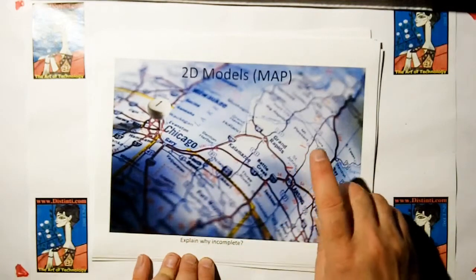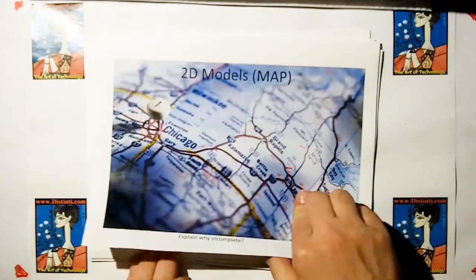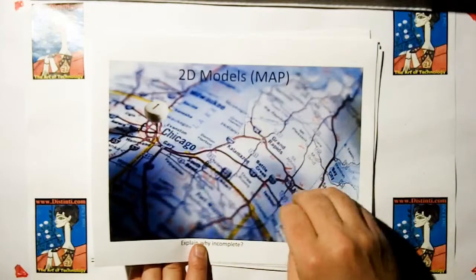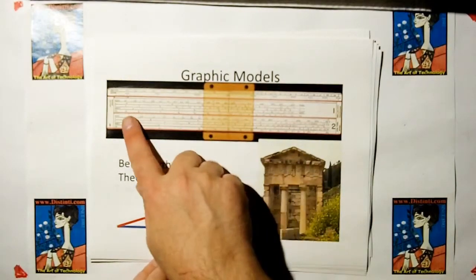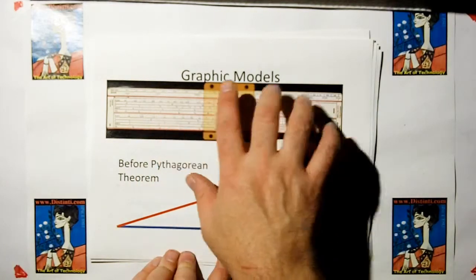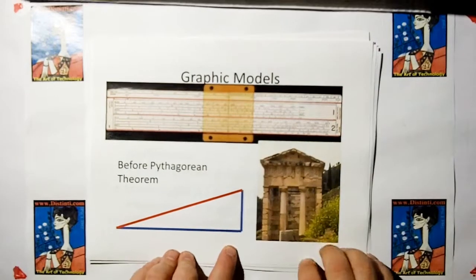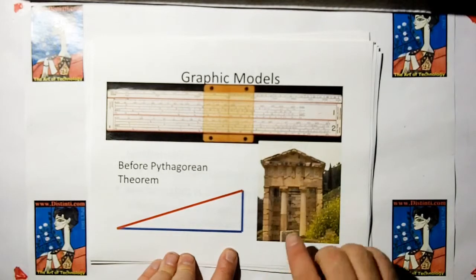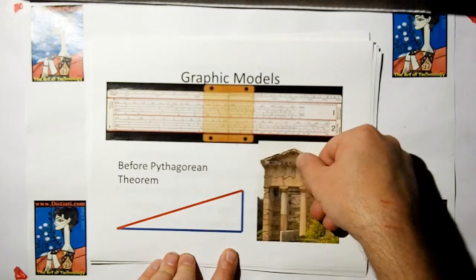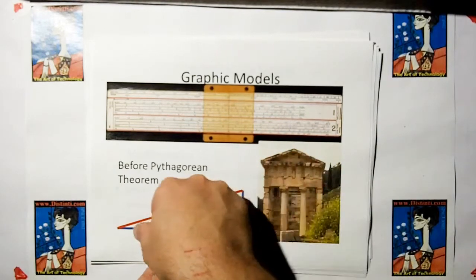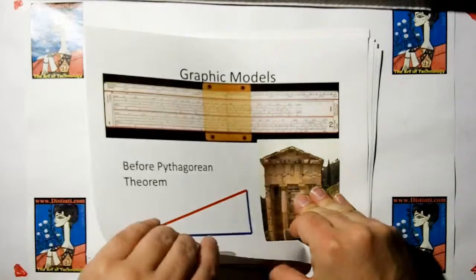There's graphic models. Artillerymen use a graphic firing table where they dial in the range to target, and it tells them how high to set the howitzer and how much spin is going to cause the drift of the artillery round, so they can correct for that. Before the day of Pythagorean theorem, if you wanted to calculate how much material you need for a roof, people would actually draw 3 inches by 8 inches and measure how many inches is the hypotenuse, and that would tell them how many feet.